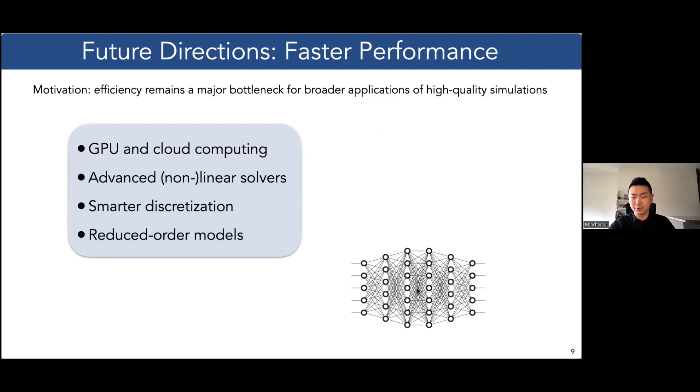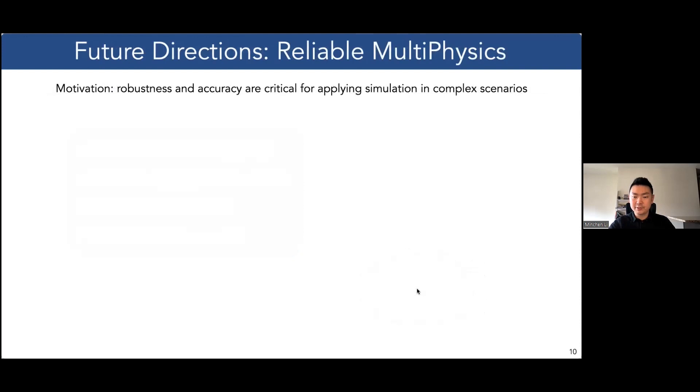Reduced order models, possibly based on neural networks, could also be useful for speeding up simulation of specific scenarios, especially in gaming and VR applications that require real-time feedback.